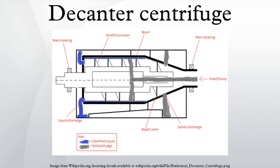A decanter centrifuge separates solid materials from liquids and slurry, and therefore plays an important role in wastewater treatment, chemical, oil and food processing industries. There are several factors that affect the performance of a decanter centrifuge and some design heuristics to be followed which are dependent upon given applications.